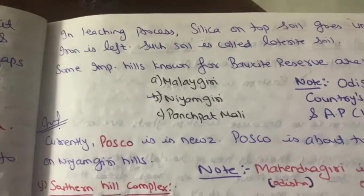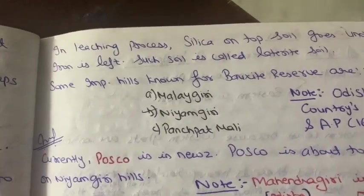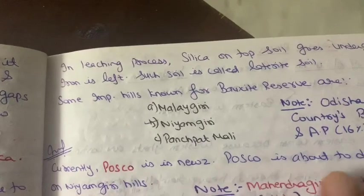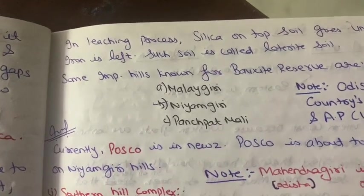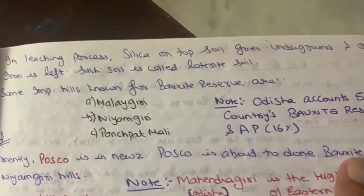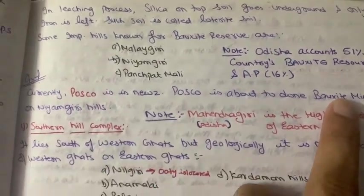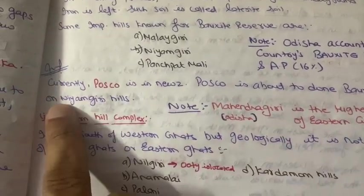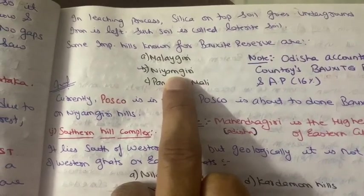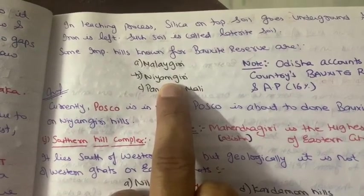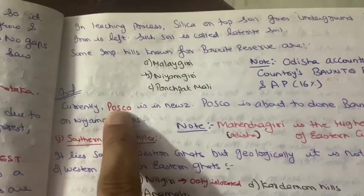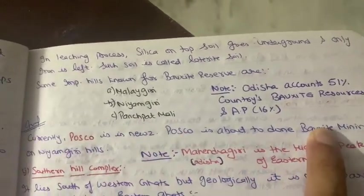There is a company called POSCO that often appears in the news. POSCO is a company that does bauxite mining. Recently it has been in the news for mining bauxite from the Niyamgiri Hills. Niyamgiri is an important place with significant bauxite resources, and POSCO carried out mining there.